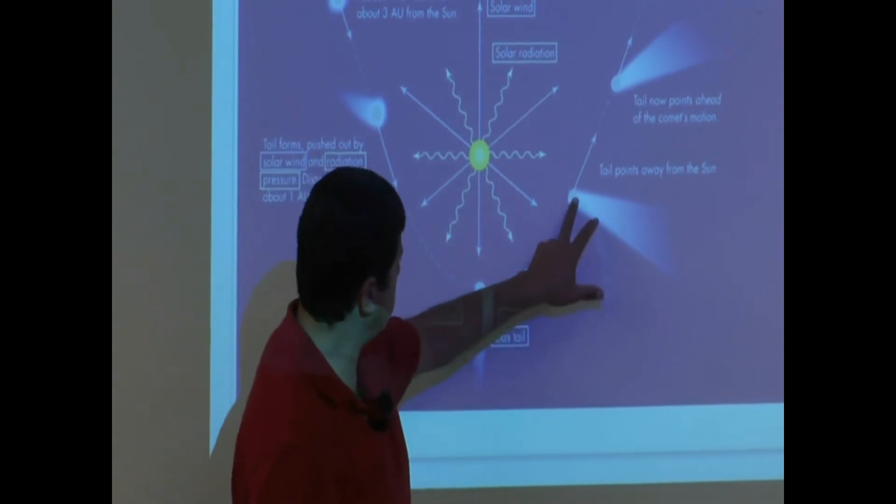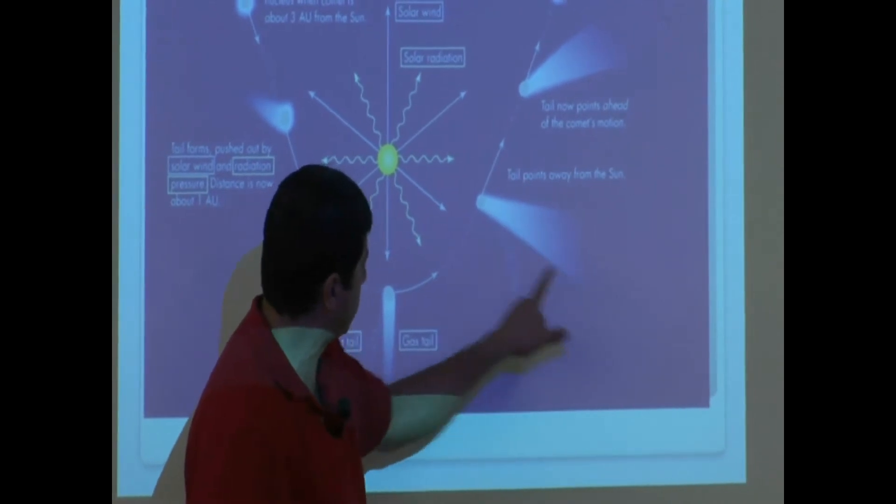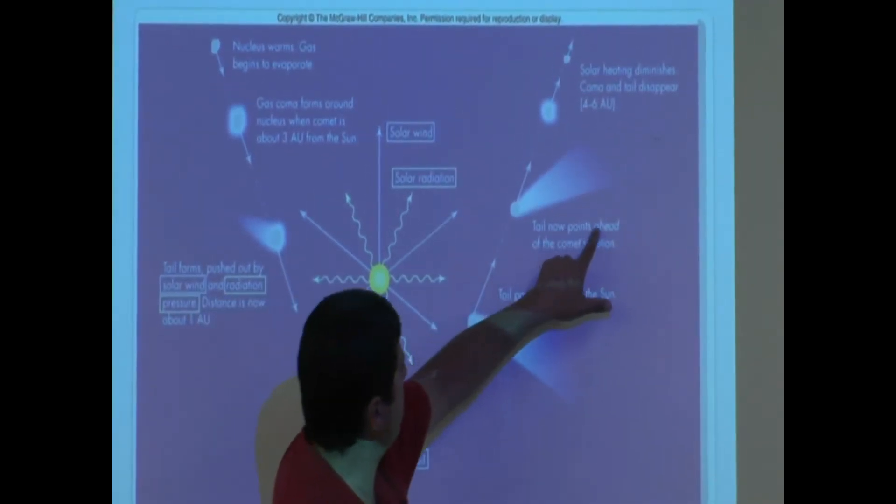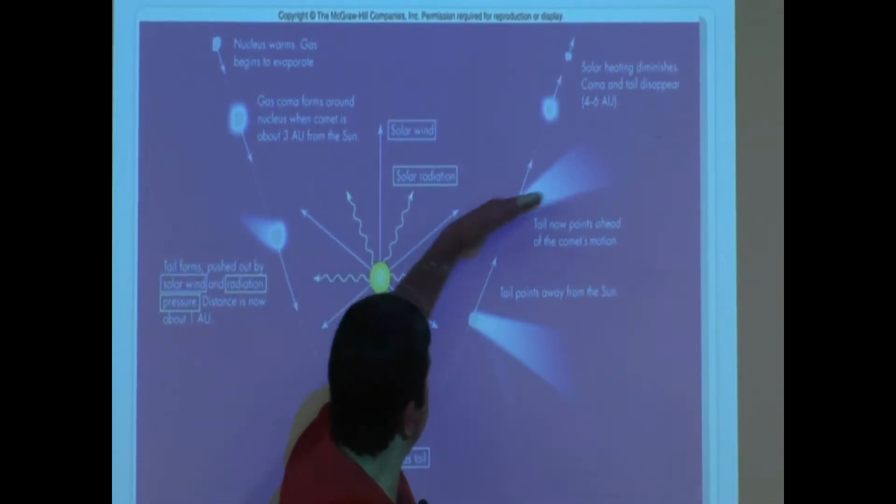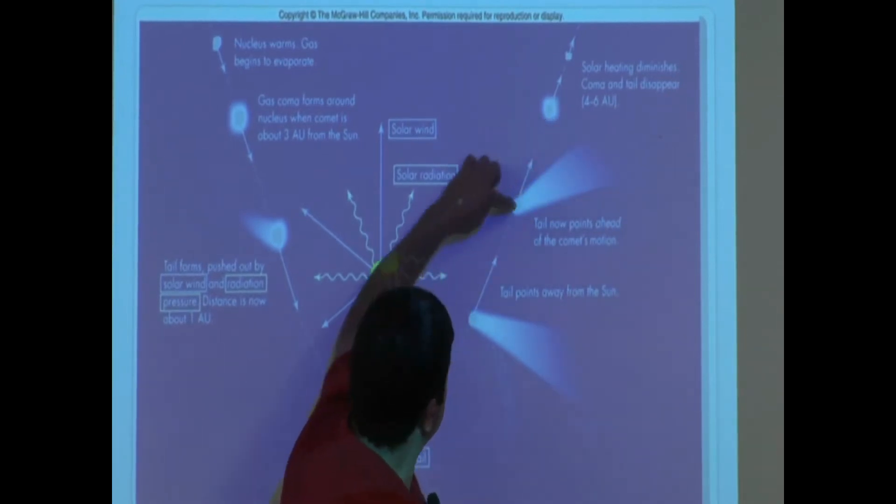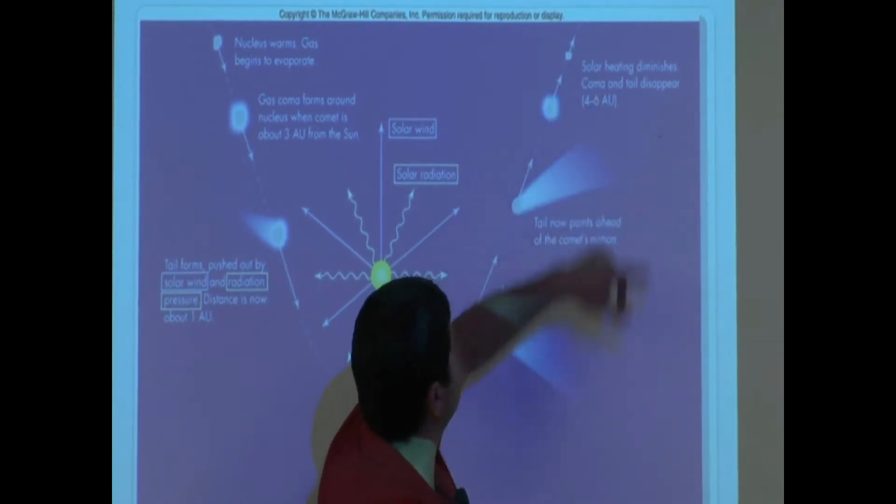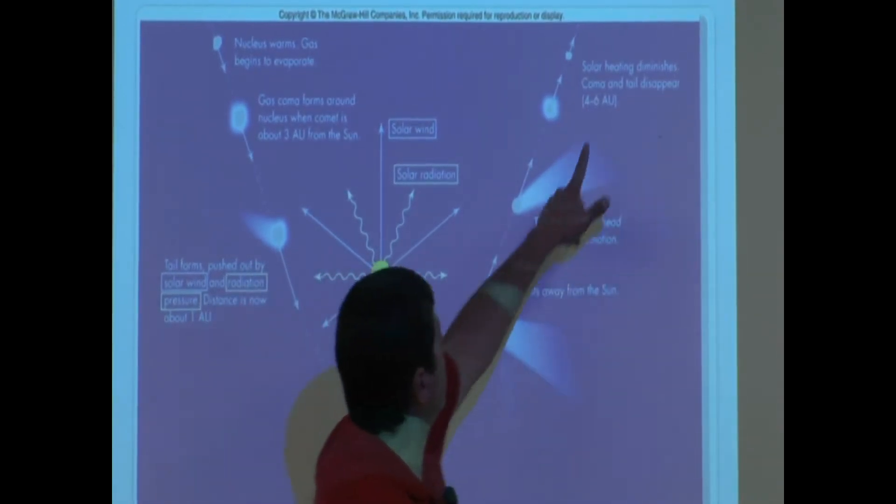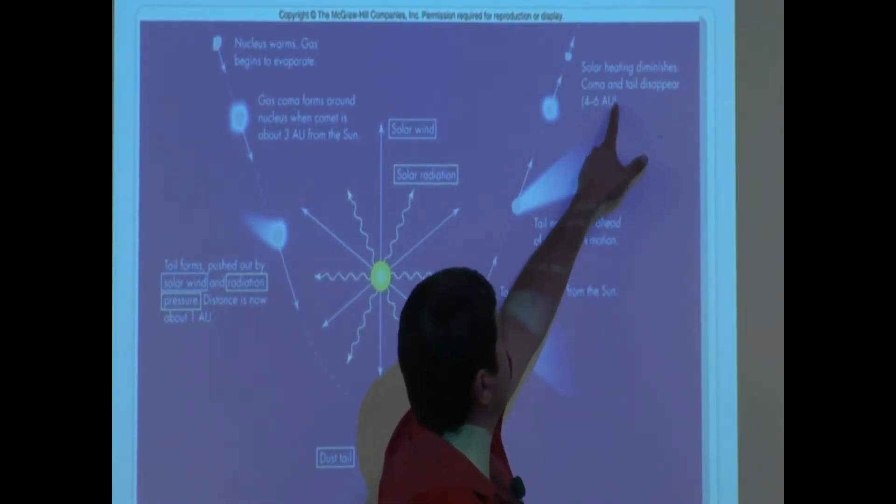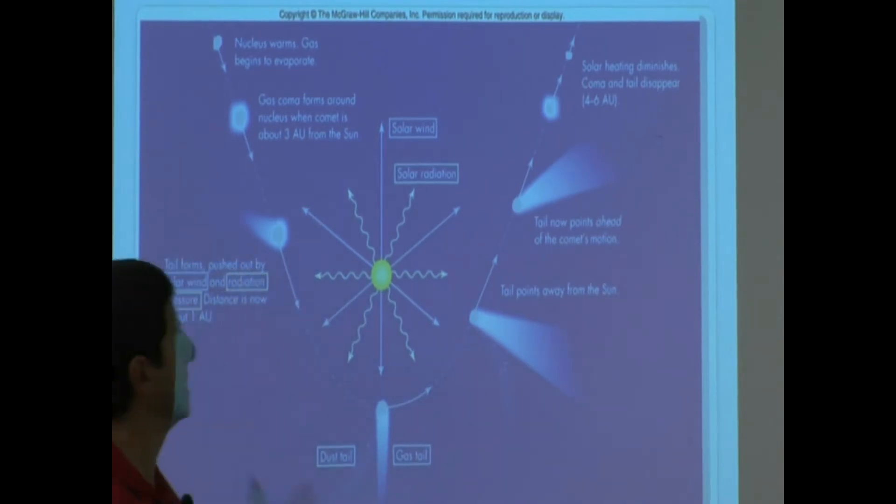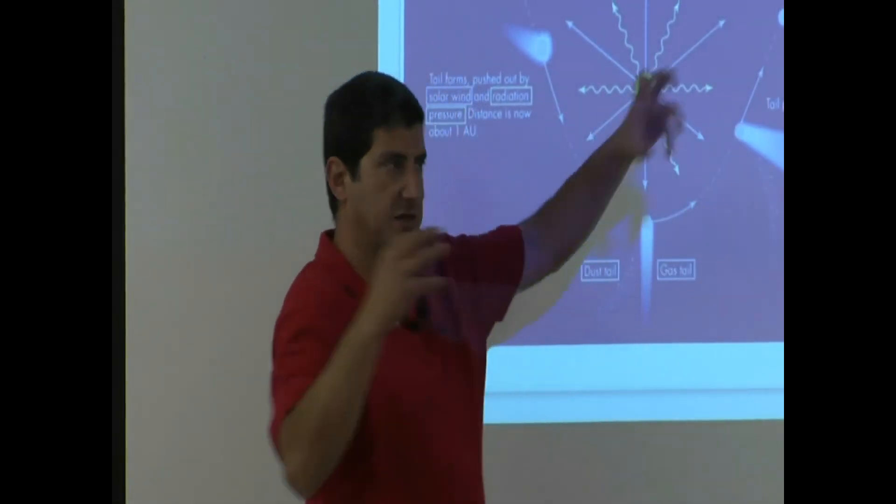So then you go like this. By the time the comet gets here, you see the ionic tail points away from the sun, and then this is the dust tail. Tail now points ahead of the comet's motion. You see now that it's here, and the sun pressure is pushing on it. And then by the time it's getting farther away, solar heating diminishes. Coma and the tail disappear eventually by the time it gets here. By the time it's four to six AUs away, the coma has already disappeared. So when can we best see it? When it's close to the sun, when the tail is big.